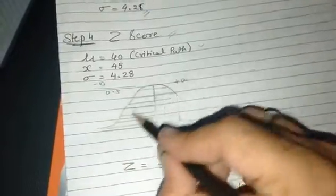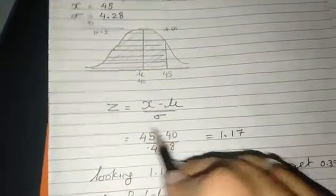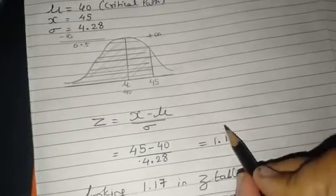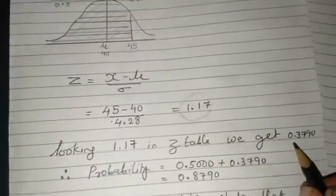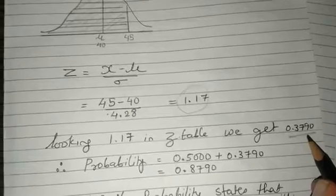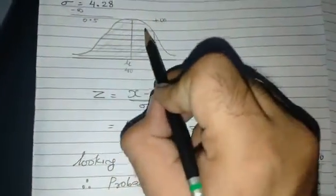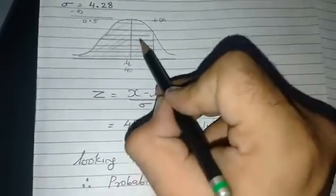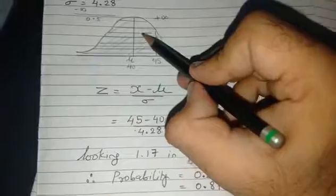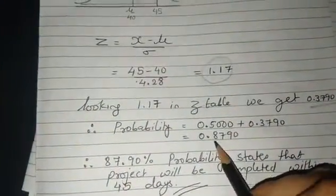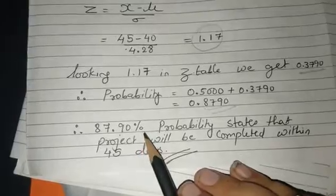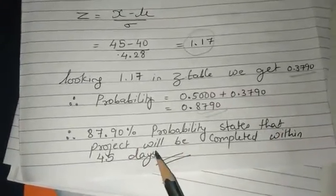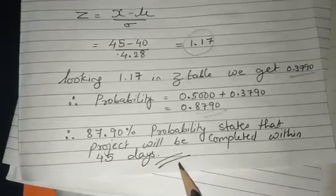Z = (X - μ) / σ. We apply all the values and get 1.17. That would be seen in the Z table, and we get the value 0.3790. That value would be added to 0.5, so adding both gives our percentage. Our answer is 0.8790. We can write that 87.90% probability states that our project will be completed within 45 days.